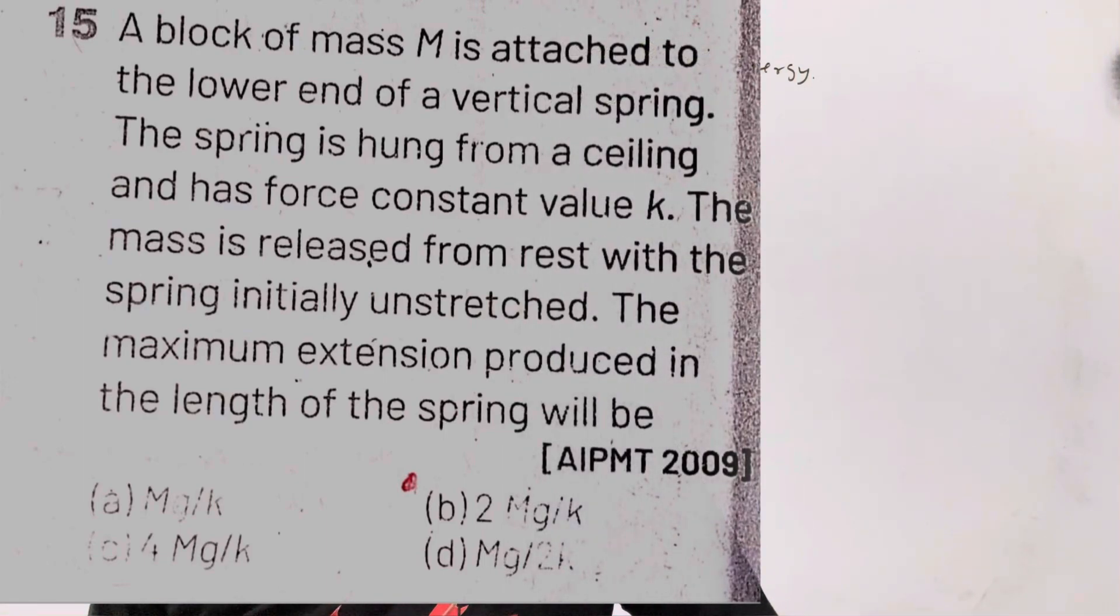A block of mass M is attached to the lower end of a vertical spring. The spring is hung from a ceiling and has force constant K. The mass is released from rest with the spring initially unstretched. The maximum extension produced in the spring will be...